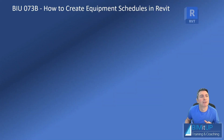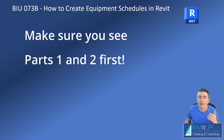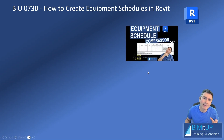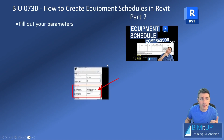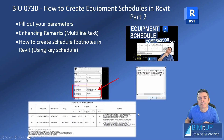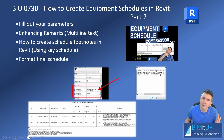Hello everyone, Alex here. Today we're going to continue with how to create equipment schedules in Revit. In part one, I'll show you how to create shared parameters and how to add those shared parameters to your equipment and your schedule. In part two, I'll show you how to fill out your parameters. Also, I'm going to show you how to create schedule footnotes using key schedules. And finally, we're going to format the final schedule so that it looks nice and pretty like what you see on the screen. See you in Revit.